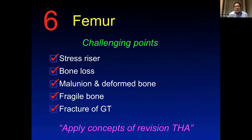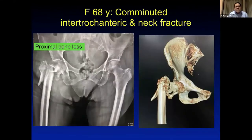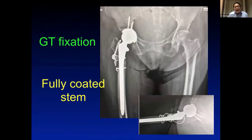On the femoral side, challenging points include stress risers, bone loss, malunion or deformed bone, fragile bone, and fractures of the greater trochanter — all requiring revision hip arthroplasty principles. For a nonunion of intertrochanteric fracture, use a cable grip device and bypass the stress riser with a full-coat cylindrical stem. In a neglected comminuted intertrochanteric and femoral neck fracture, a long full-coat stem with wire fixation of the greater trochanter fragment was used.